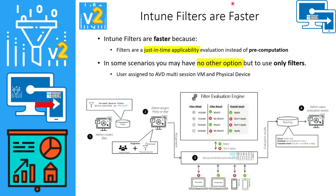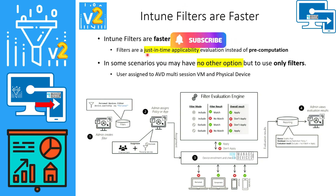Why are Intune filters faster? The accurate technical information is that Intune filters use just-in-time applicability evaluation rather than pre-computation. In the Azure Active Directory dynamic group scenario, pre-computation is used, so group membership updates are not always real-time. Intune filter evaluation is therefore much faster than Azure Active Directory dynamic group update or evaluation.